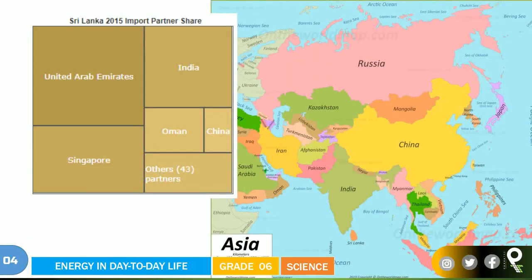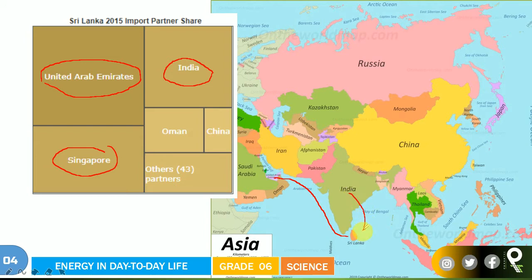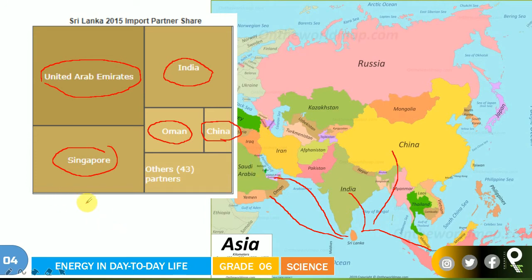Where is Sri Lanka getting its fossil fuel from? In this picture, it's getting from United Arab Emirates. Tiny Sri Lanka is over here, and this is United Arab Emirates. The second and third sources are India and Singapore. We are also getting oil from Oman, which is very next to the United Arab Emirates, and China is also giving oil to us. You came to know the major five countries — there are 43 other partner countries as well that give oil to Sri Lanka.